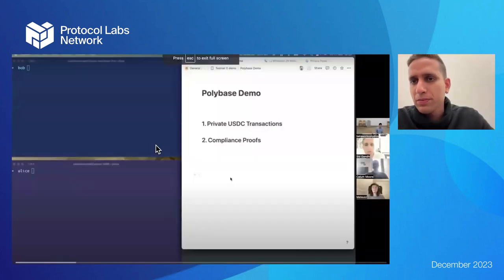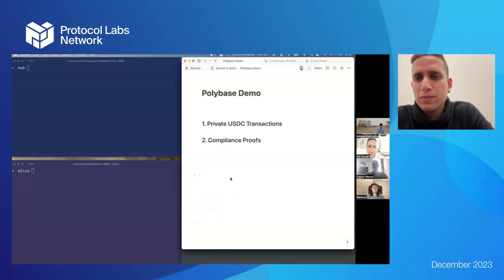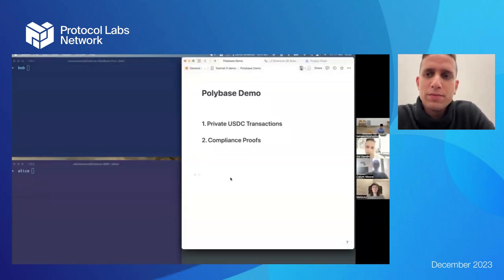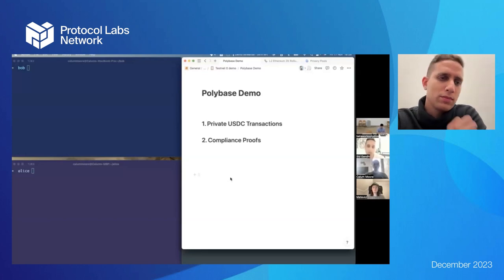Polybase is a layer-2 ZK rollup for private transactions. Today we're demoing two of the most important features: first, private USDC transactions — any USDC transacted today is public forever, which is a problem for payroll, B2B transactions, trade finance, and consumer ribbons. We're showing how to do this for the first time ever on a public network. Second, compliance proofs — generating AML compliance proofs on private transactions, something that hasn't really been possible before. We've built this network from scratch and written the ZK circuits from scratch.